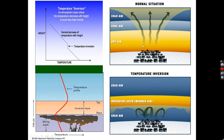If the inversion wasn't there, air would keep on rising and cooling and we would have very deep clouds and likely quite a lot of precipitation. The inversion layer stops the cloud from becoming too deep. We only get clouds if the humidity is high enough by the time the air has risen to the inversion height. The influence that the inversion has on clouds has shaped vegetation zones on the island of Tenerife, and that's something you'll see throughout the field trip.